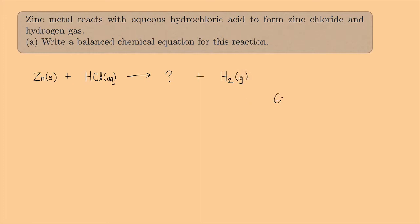Why is it H₂? Because hydrogen is one of the genuine diatomics — things ending in 'gen' or 'ine' are diatomic. So it's not just H, it's H₂ because hydrogen ends with 'gen,' so it's a genuine diatomic.